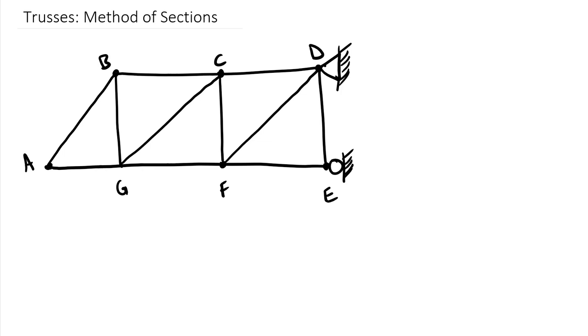Now, method of joints was kind of a brute force method that you basically had to go through, sum forces at every single joint, and it was just a whole bunch of angles, working through joint by joint by joint. Method of sections is more strategic. So let's say instead of solving for all of the members across this entire body, that we only want to solve for FG.